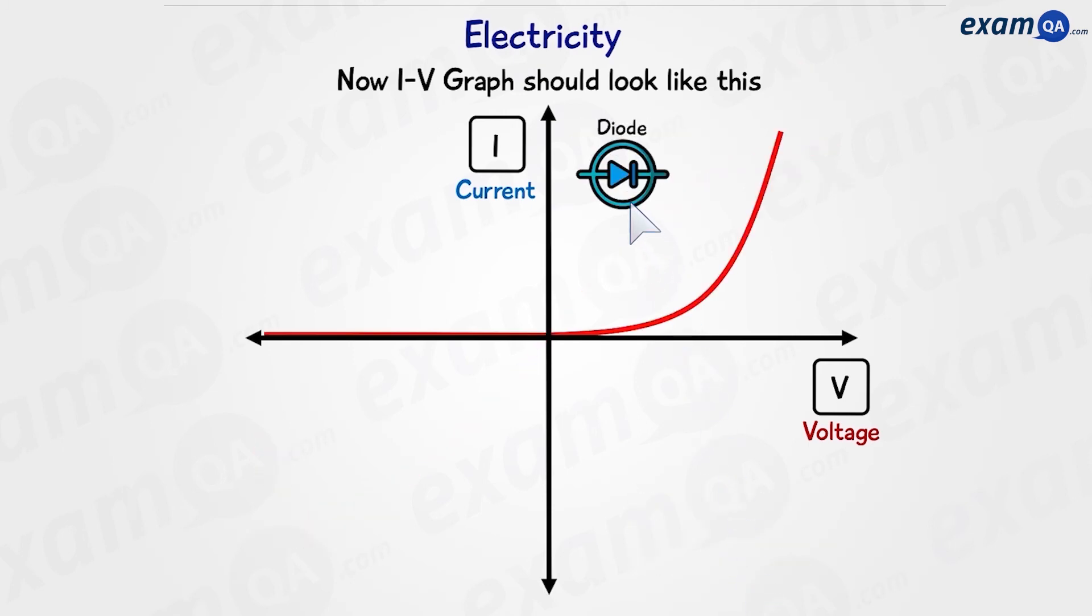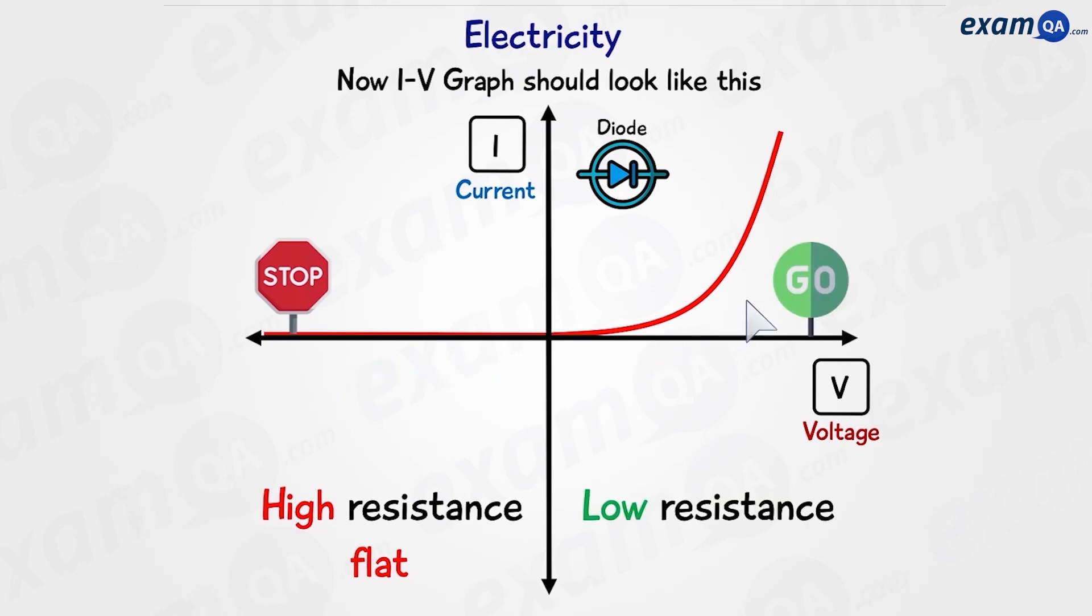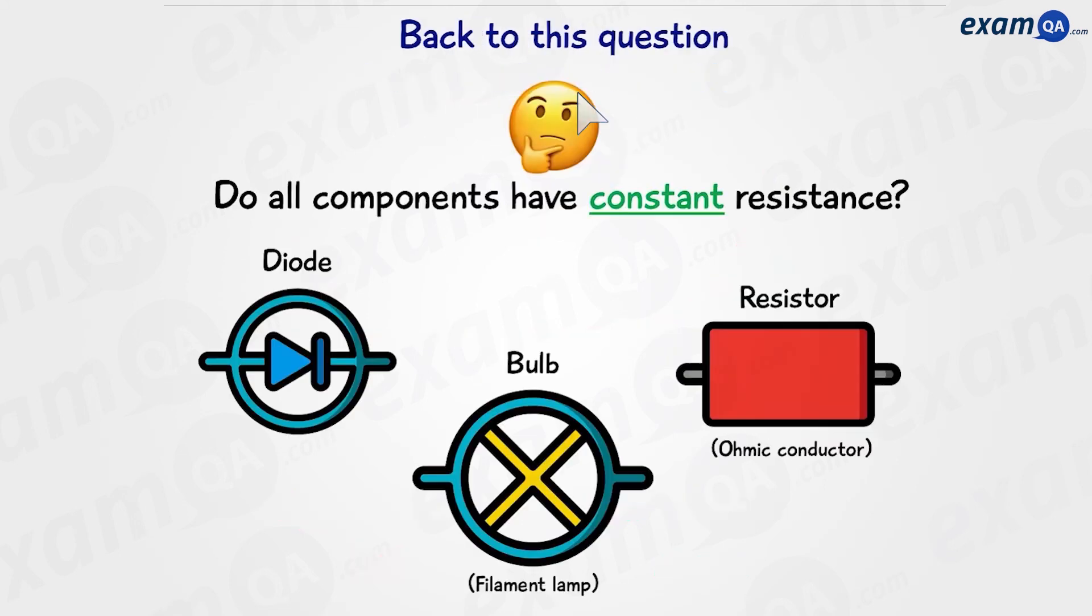But for the diode, we get a line like this. On one side, we have high resistance because the line is flat. And on the other direction, we have low resistance because the line is steep. Diodes only allow current to flow in one direction. So, back to this question: Do all components have constant resistance? If you've learned anything from this video, the answer is no.